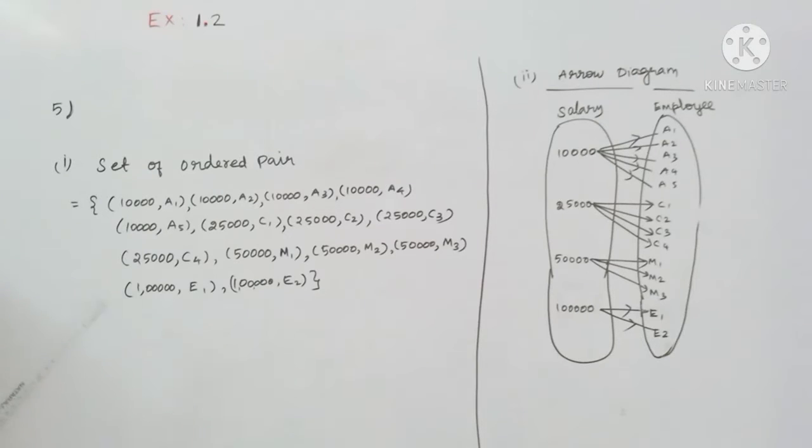Question 5 is a theory, but we are going to set up ordered pairs with an arrow diagram.